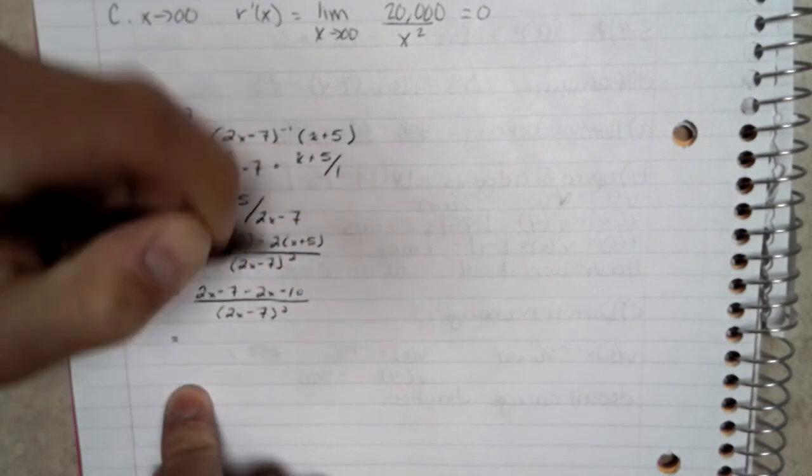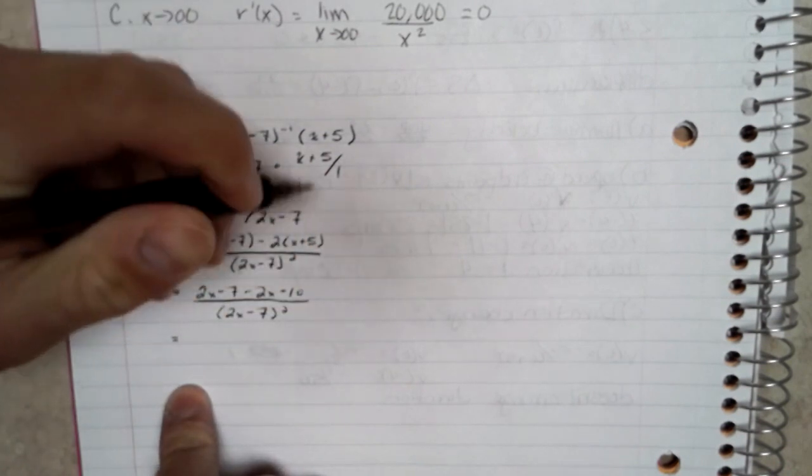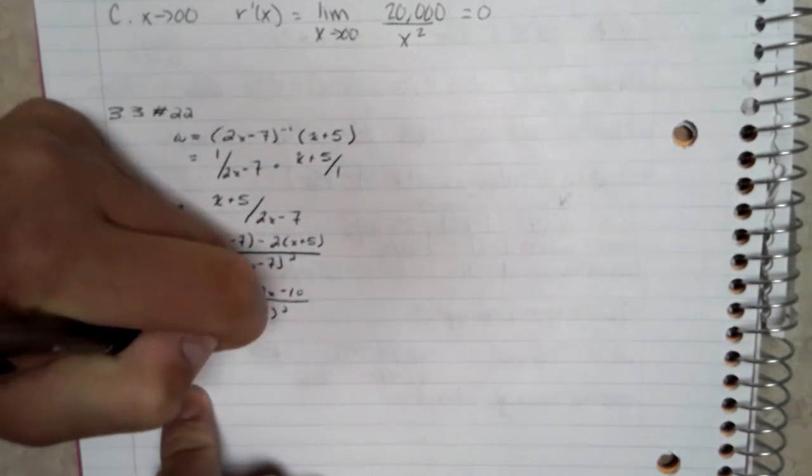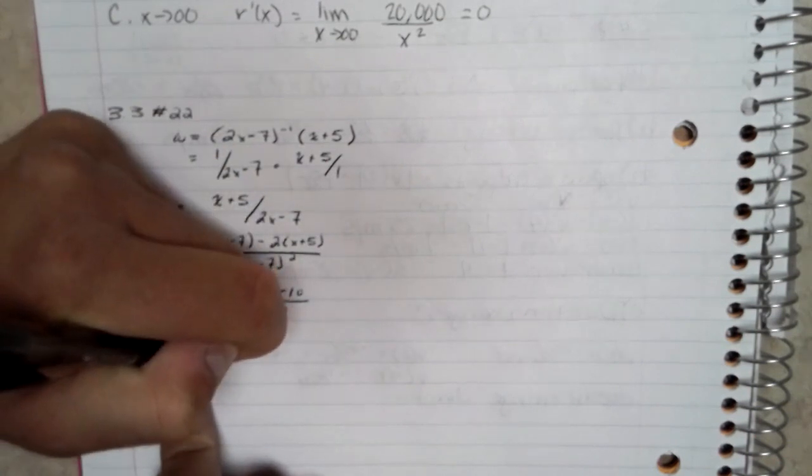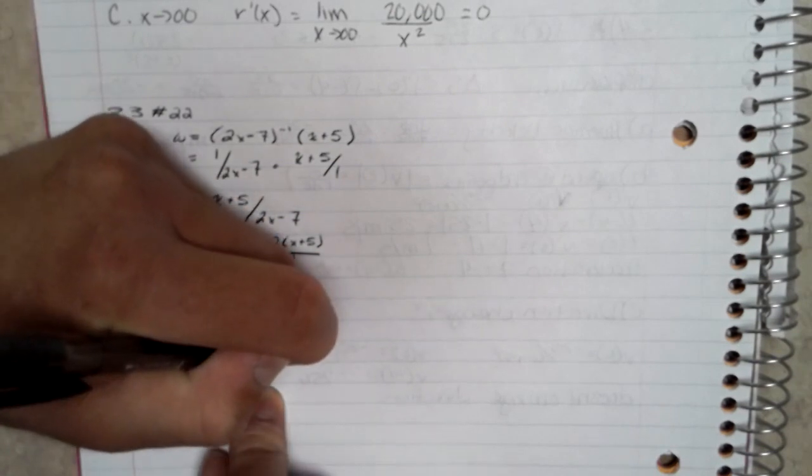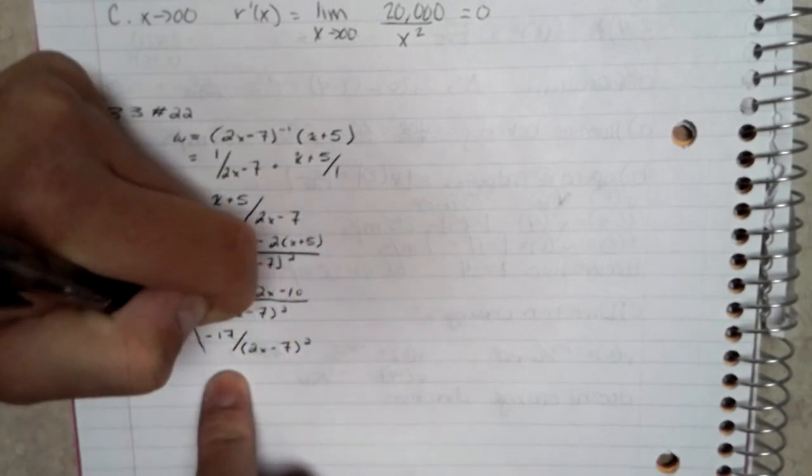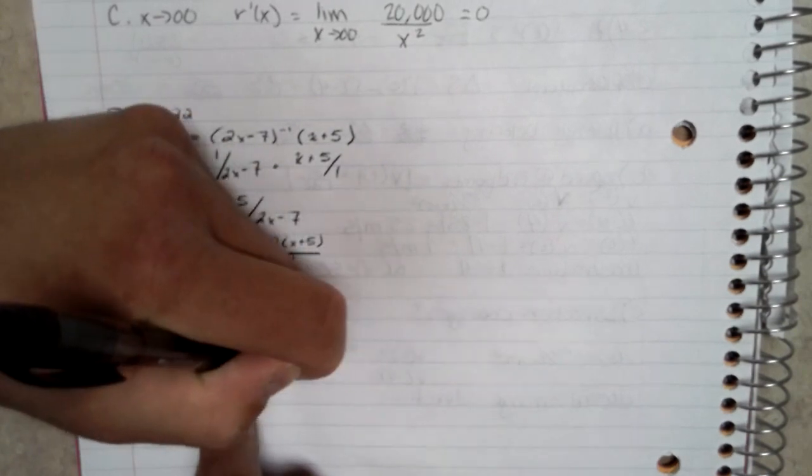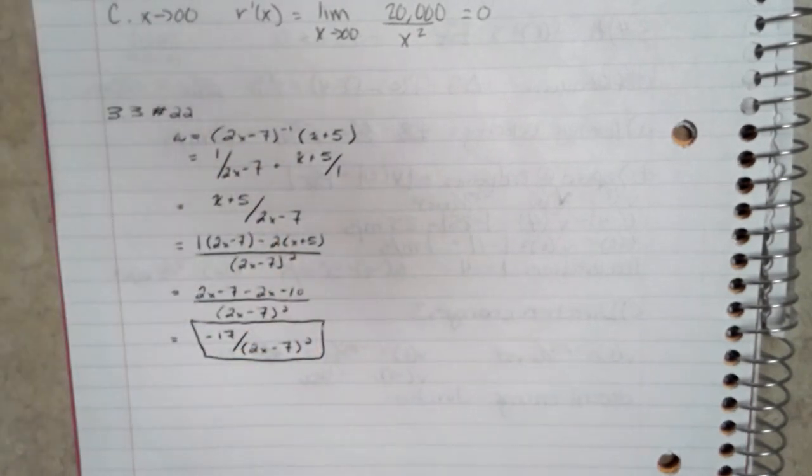From there, I combine the like terms. The 2x's cancel, leaving you with negative 17 all over (2x minus 7) squared.